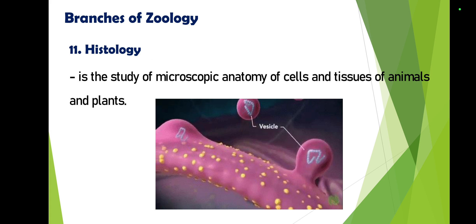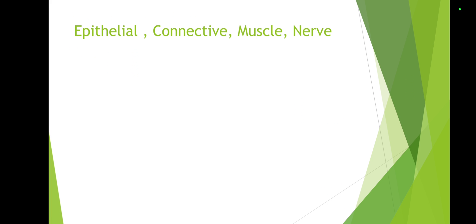Another branch of zoology is histology — focused on the cells and tissues of animals and plants, also called microscopic anatomy. Because cells and tissues cannot be seen with the naked eye, we can only observe them using laboratory instruments such as the microscope.